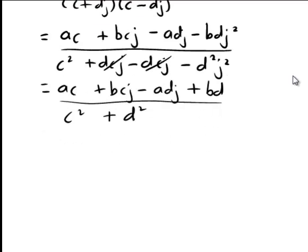And the last thing we do is group real and imaginary terms on the numerator. So in this case, the real terms, that is those without j, are ac plus bd.